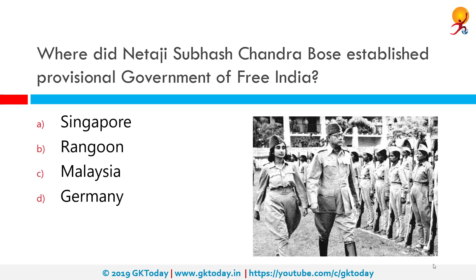Where did Netaji Subhash Chandra Bose establish the provisional government of free India? The correct answer is Singapore. Singapore at that time was occupied by Japan. On 21st October 1943, Subhash Chandra Bose set up the provisional government of free India in Singapore.